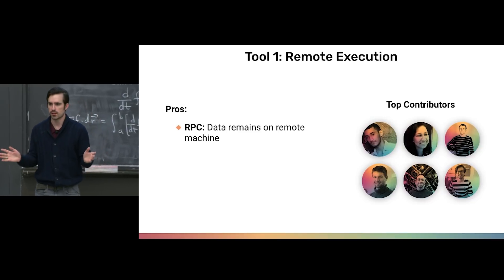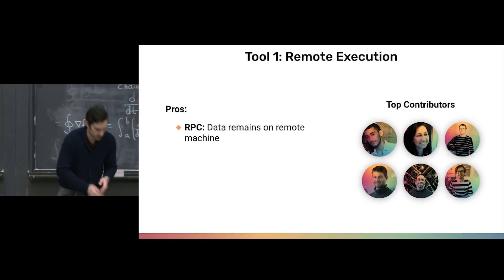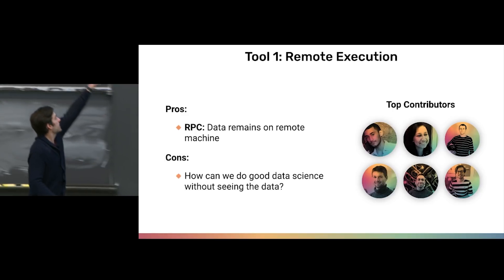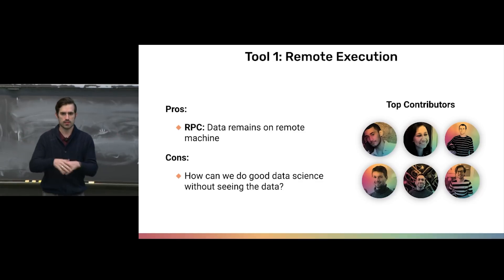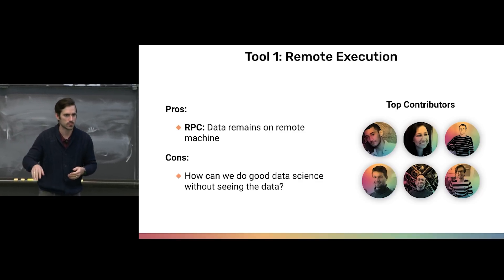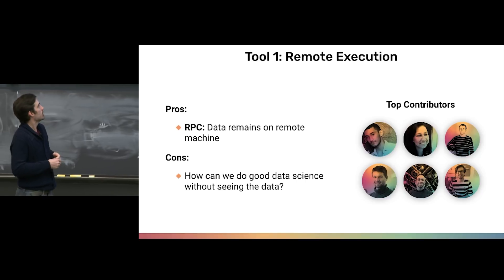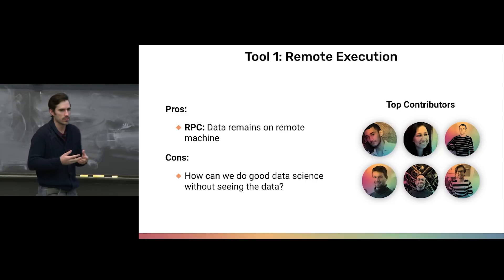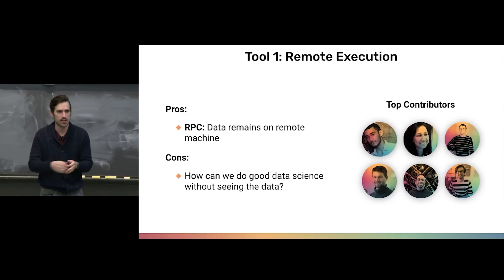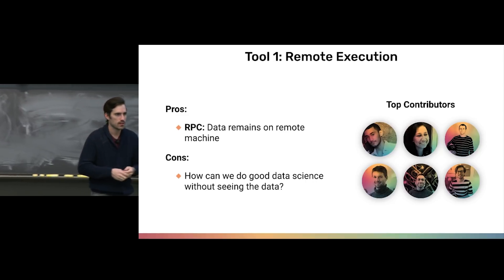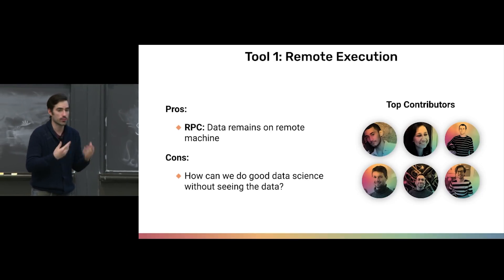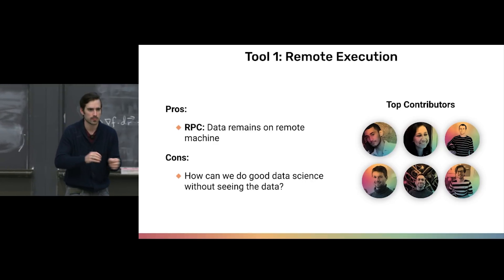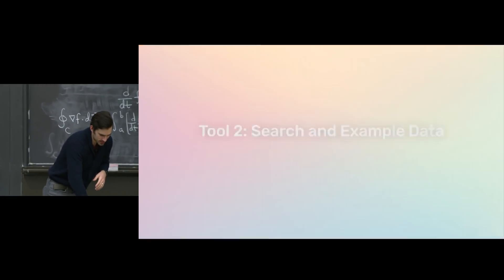So this is where we start. In the Pareto principle sense — 80% for 20% — this is the first big cut. The pro is that data remains on a remote machine, and we can in theory do data science on a machine we don't own or have access to. But the problem is: how can we actually do good data science without physically seeing the data? The process of answering questions is inherently iterative — give and take. I learn a little bit, I ask a little bit. This brings me to the second tool: search and sample data.